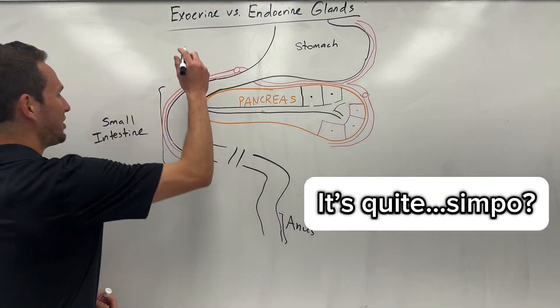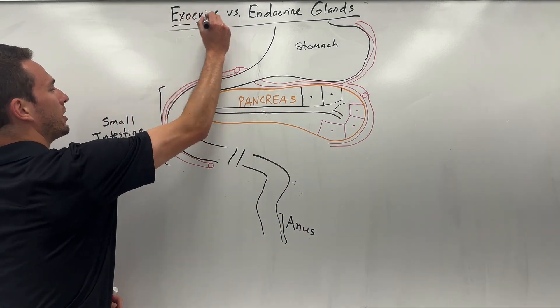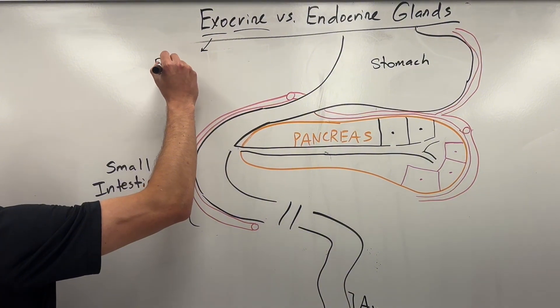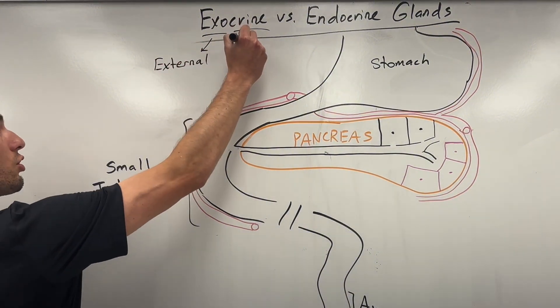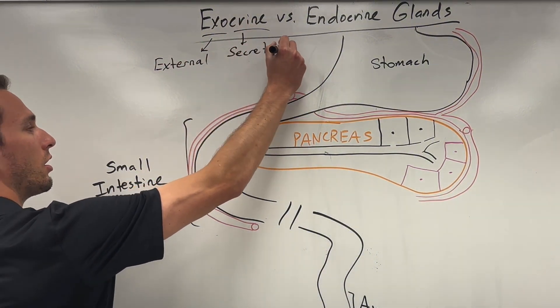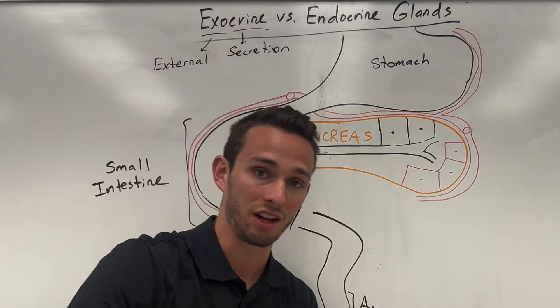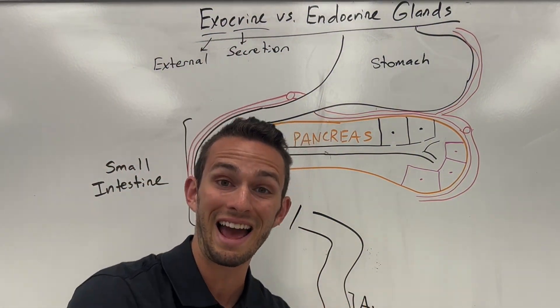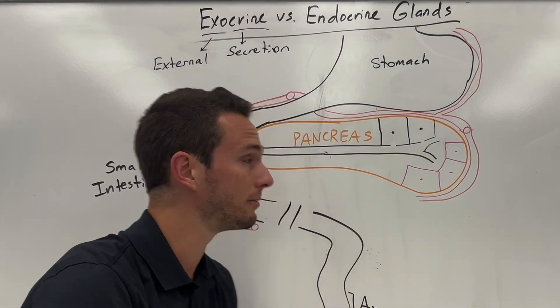Simple. Exocrine quite literally means external secretion, so these will be cells that are going to be secreting something out of the body.